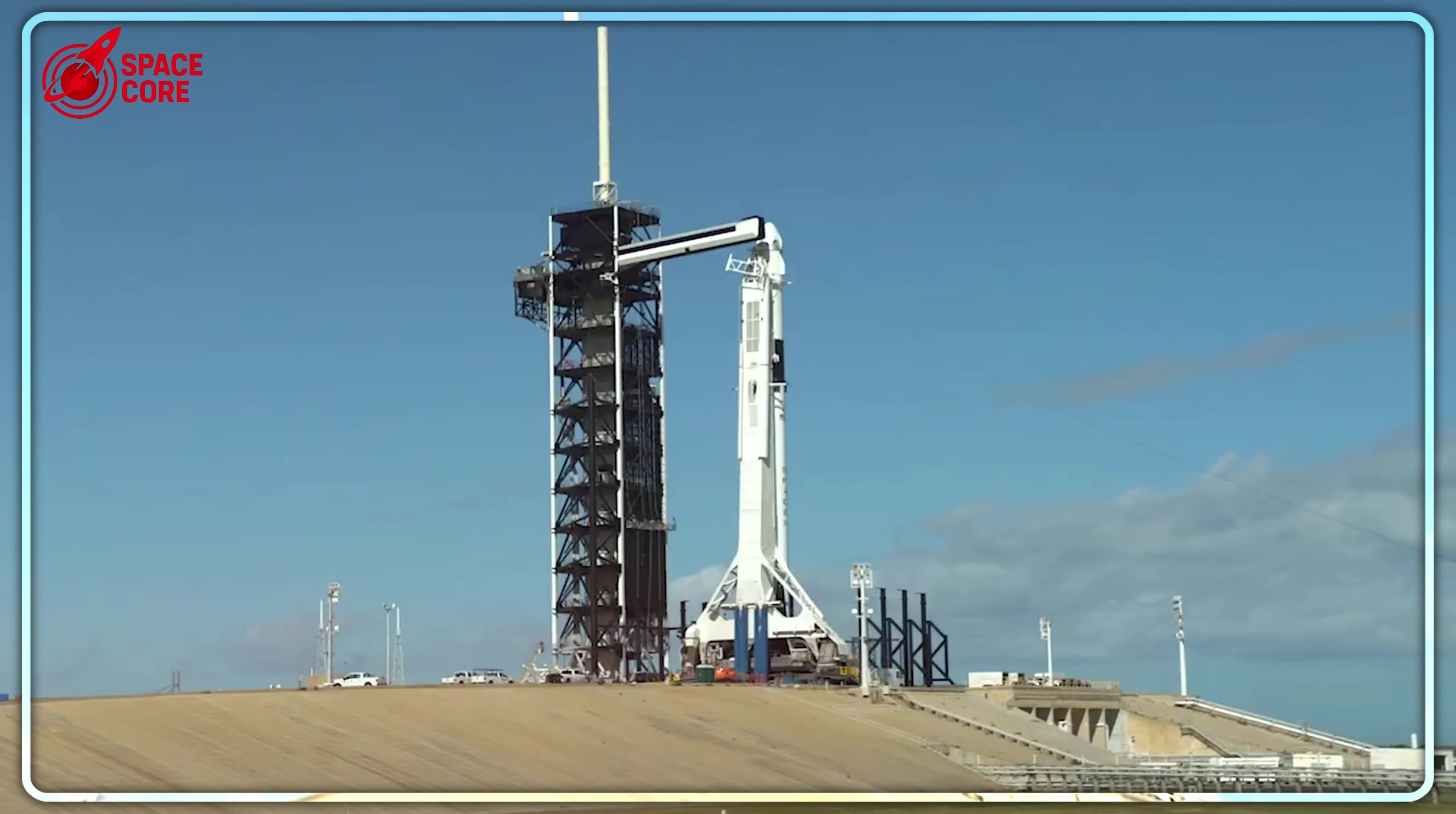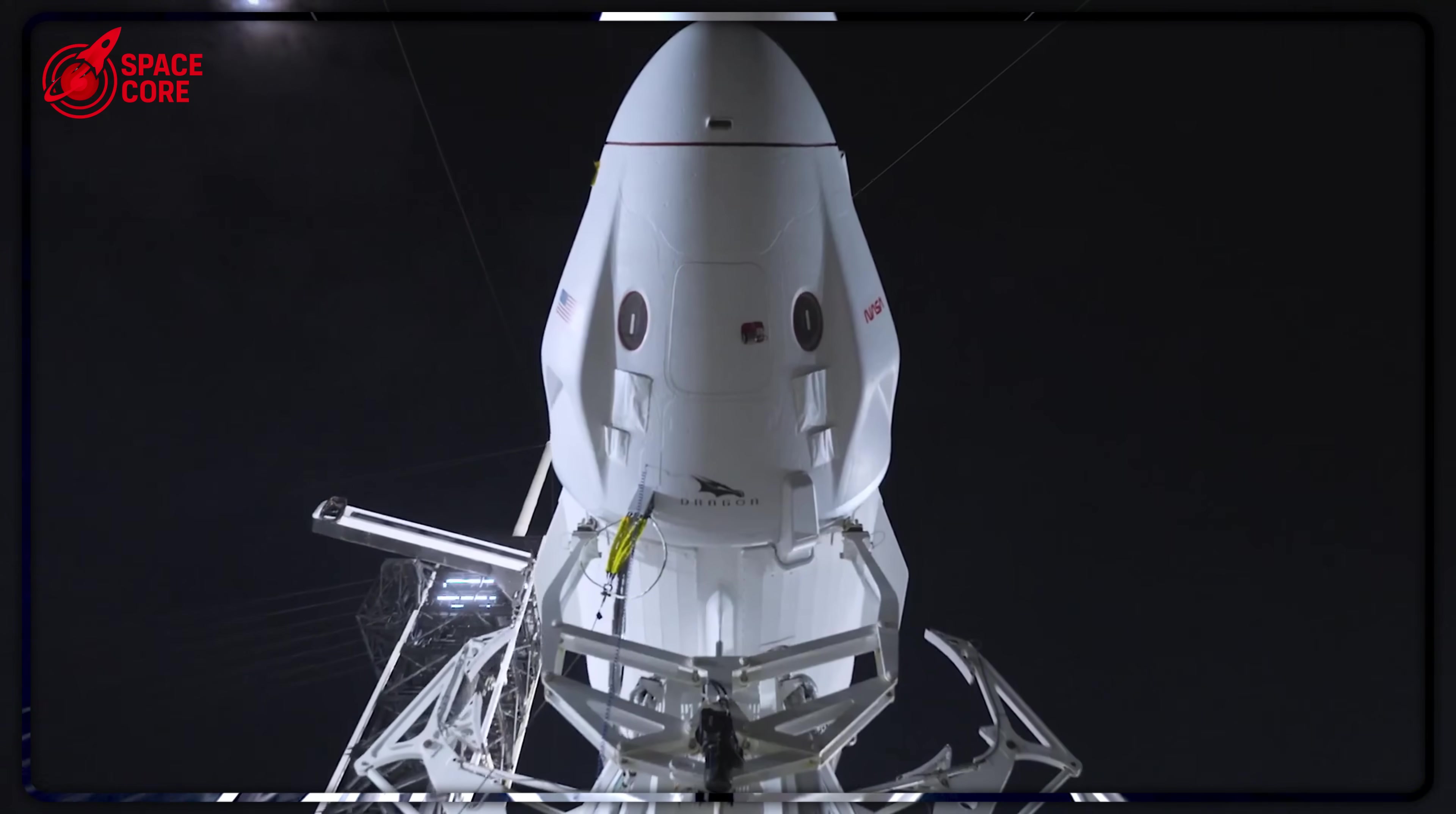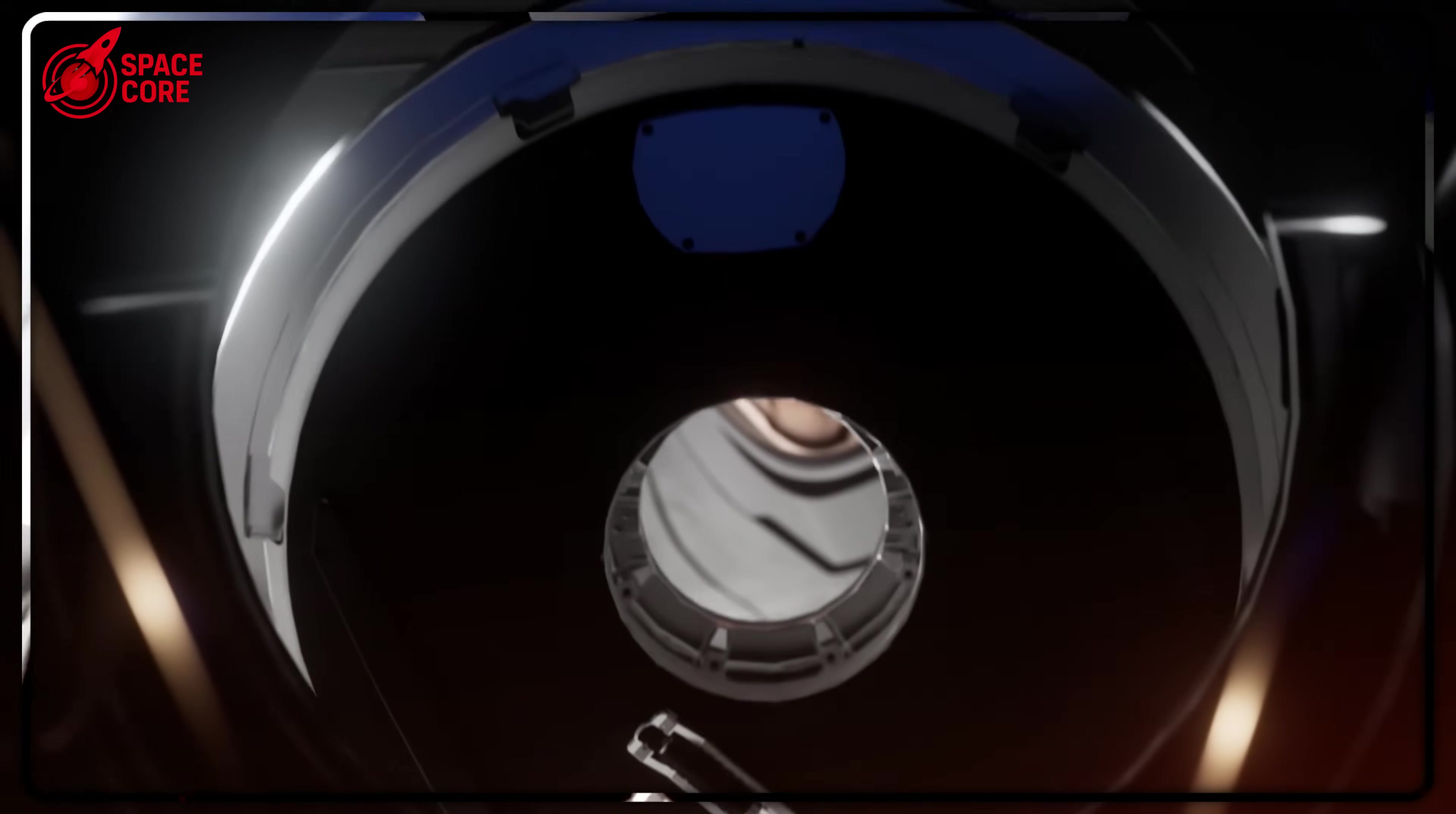After C204's destruction, SpaceX made the devastating decision to abandon propulsive landing for crew missions. Those eight Super Draco engines got demoted to emergency-only duty. Musk's revolutionary landing system became a backup to the backup, only to be used if all four main parachutes somehow failed during descent. Even then, it would splash into the ocean, not land gracefully on solid ground.